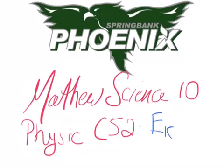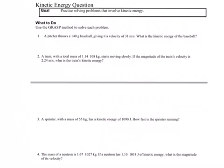I'm going to be using the notes that were given to you. Here's the kinetic energy question — we're going to look at number one. A pitcher throws a 140 gram baseball, giving it a velocity of 31 meters per second. What is the kinetic energy of the baseball? Always write what your knowns are, then write the formula, think about your substitution, and then your answer with units.